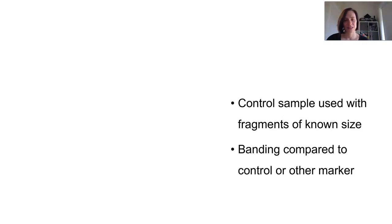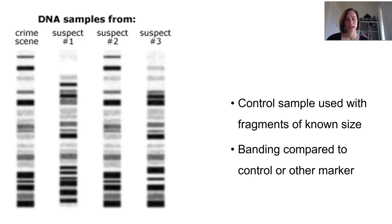But in a situation, say in a forensic situation, you might actually need your control to be the DNA found at the crime scene, so that when you are running different suspects or whoever, then you can actually compare whose is whose. And we can clearly see that suspect two seems to match the bands on the crime scene DNA.